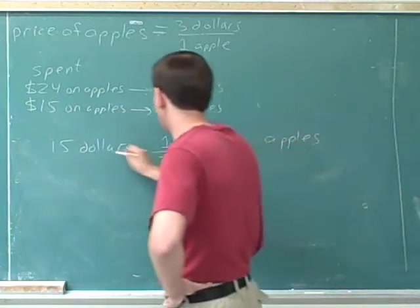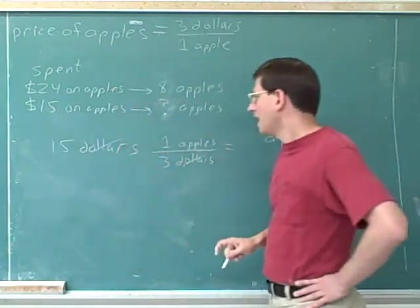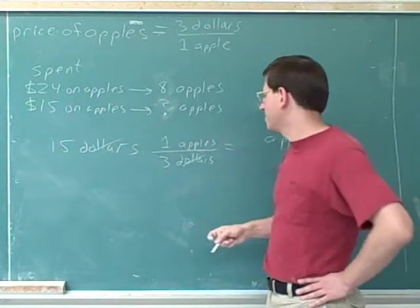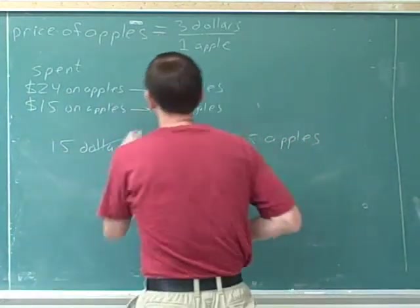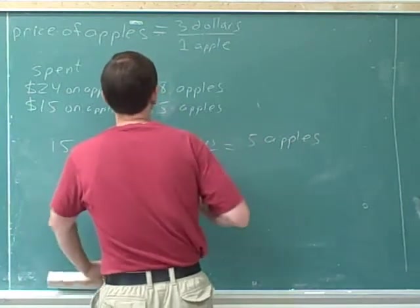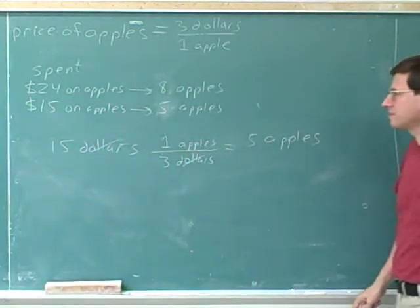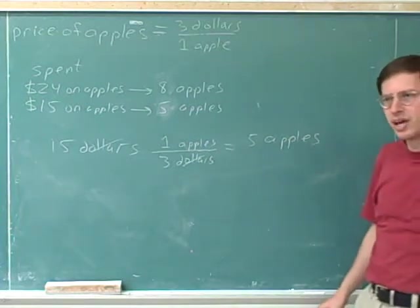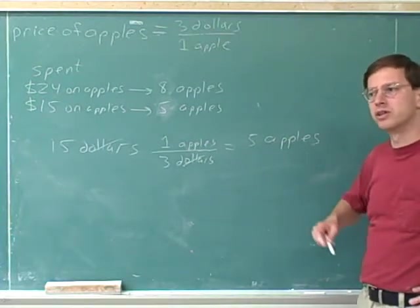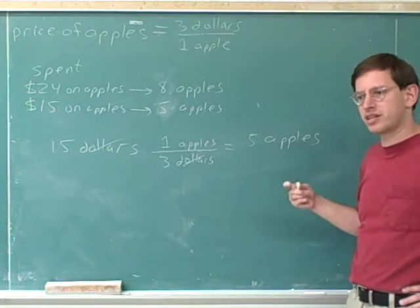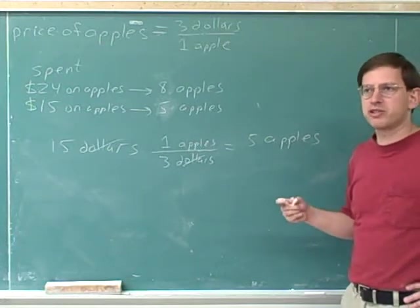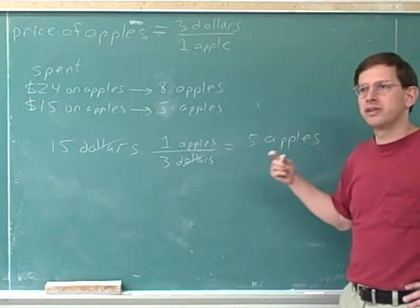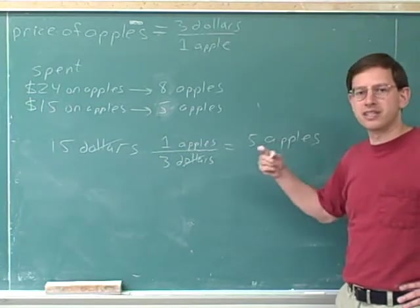We can see that was the right way to go because the dollars cancel. And now this is really 15 divided by 3. We can ignore the 1. Well, 15 divided by 3 is 5. If you spent $15, you bought 5 apples. Let's do a couple more examples. Maybe this might seem trivial or overly easy, but this is a really important skill for your physics and chemistry classes. And the important thing is that when you're working with unfamiliar units, it's not nearly as trivial and easy seeming.